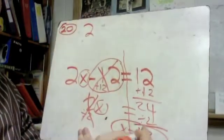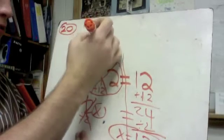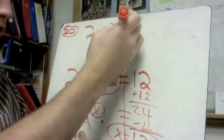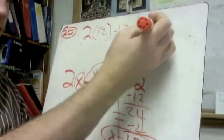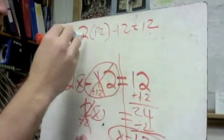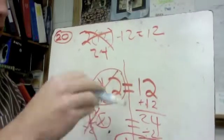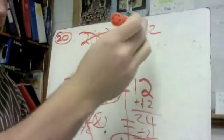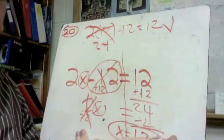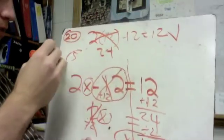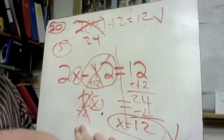So we have 2 times whatever x was, which we said was 12, and then we have to subtract 12, and we should get 12. 2 times 12 is going to be 24, 24 minus 12 is 12. That checks out, so that checks out, and as long as you have all this stuff, five questions, five points.